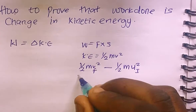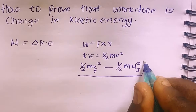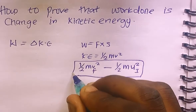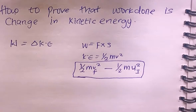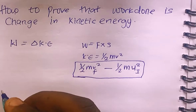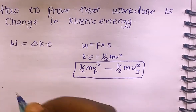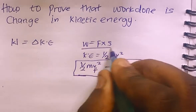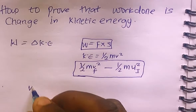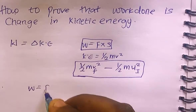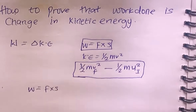This is the formula that we want to derive — we want to prove that work done is equal to change in kinetic energy. So let's consider the formula for work, which is W = F × x, meaning work done equals force times distance.